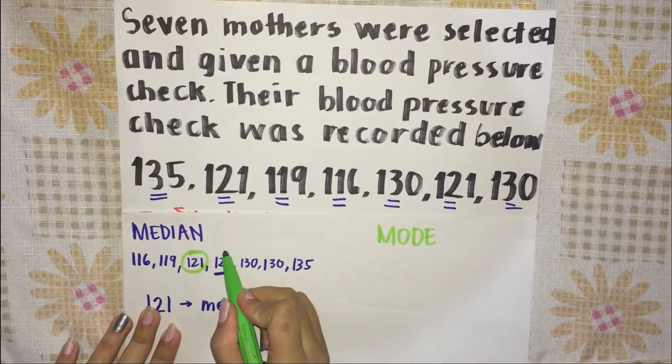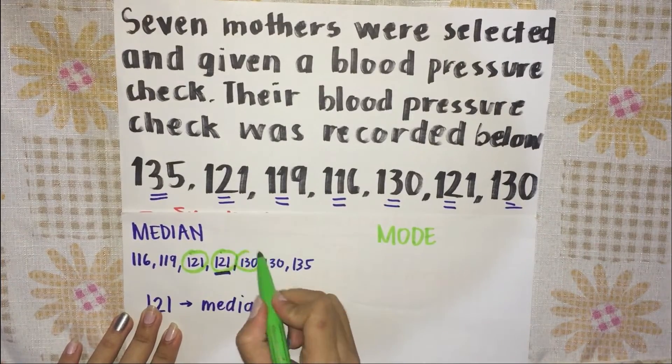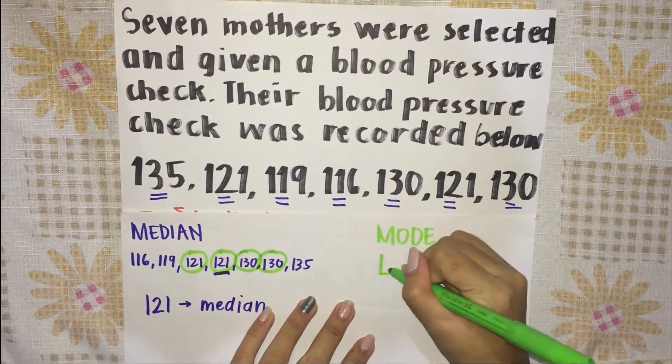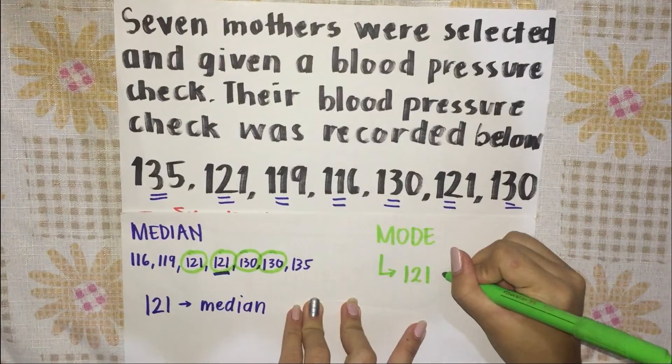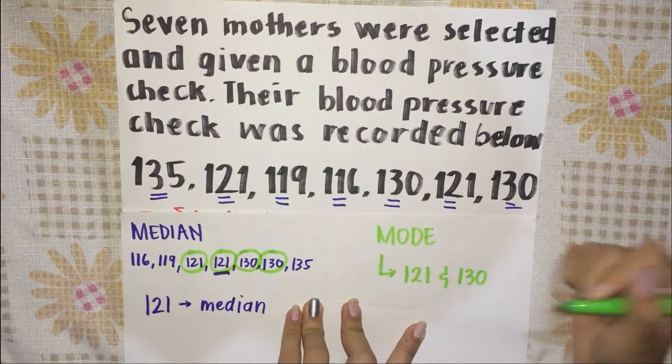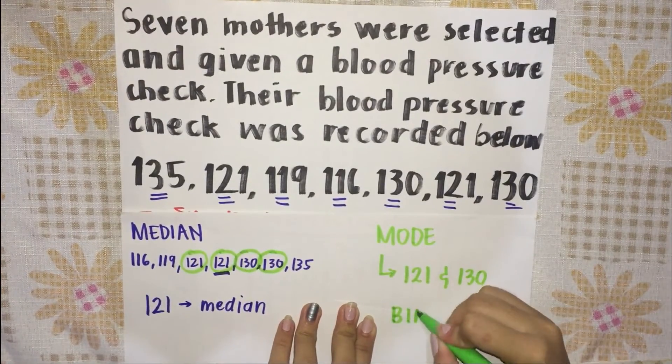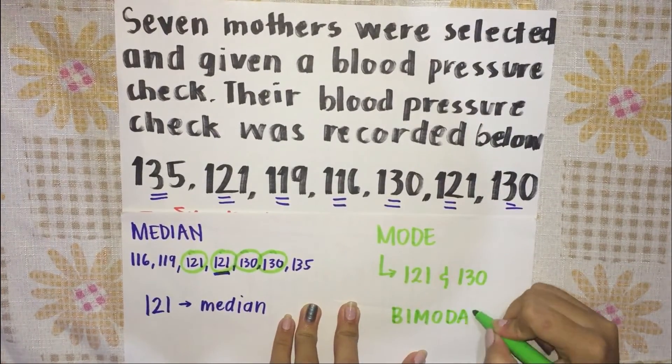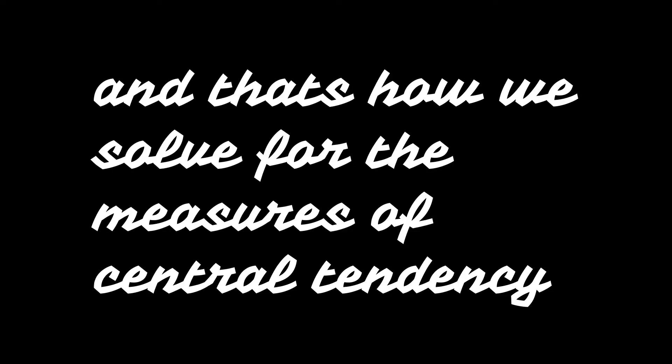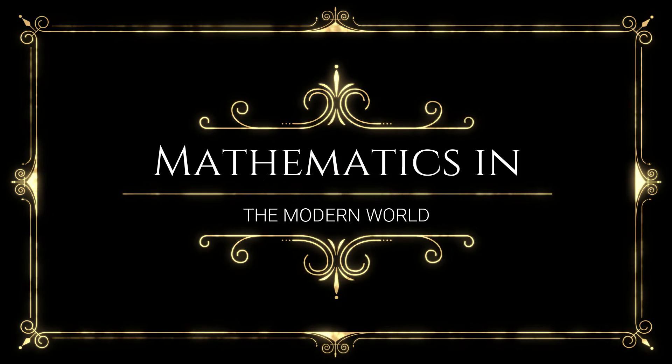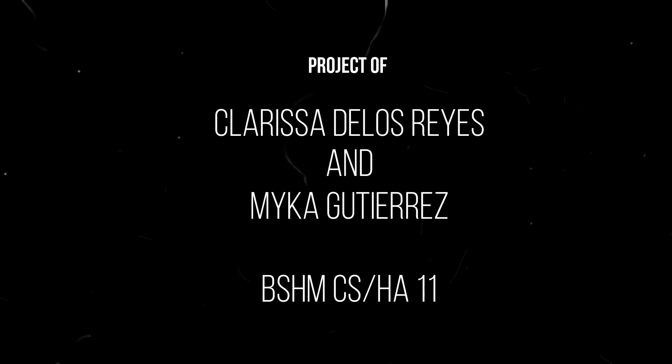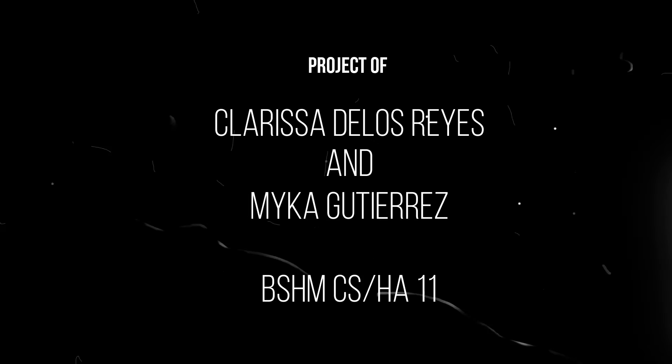To find the mode, find the value with the highest frequency. In this problem, two terms appeared twice. The mode are 121 and 130. This is an example of bimodal distribution.